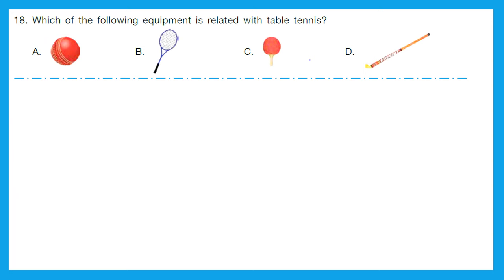Question 18: Which of the following equipment is related with table tennis? Look very closely. The right answer is option C — that is the racket for table tennis. A is a ball generally used in cricket, B is a badminton racket, and D is a hockey stick.